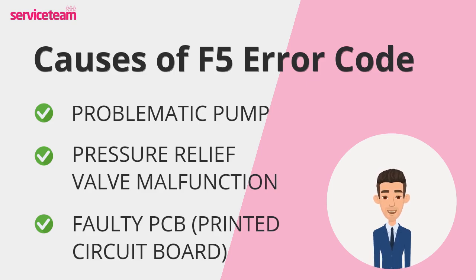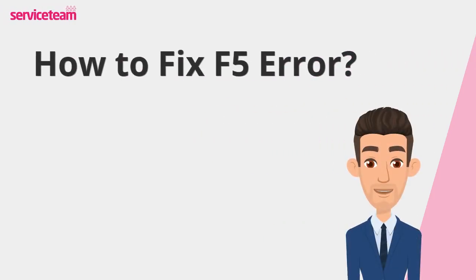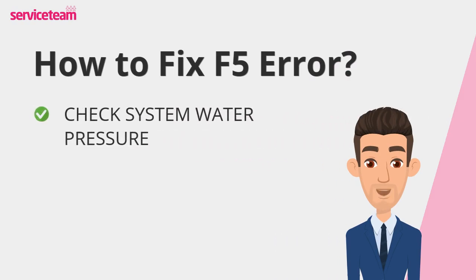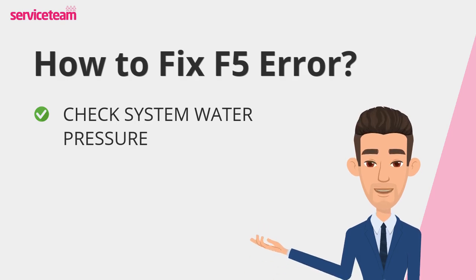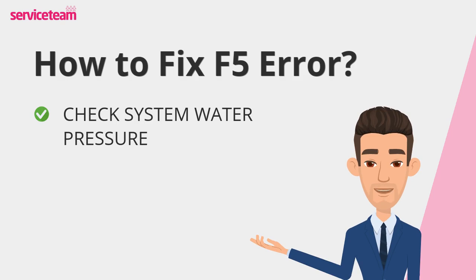Understanding these causes is the first step toward getting your boiler back on track. Let's find out how to fix the F5 error code. First, check your boiler's water pressure — it should read between 1 and 1.5 bar. If it's too low, use the filling loop to top it up. Refer to your manual for detailed guidance. Glowworm boilers need the right pressure to work properly, and low pressure is a common cause of the F5 fault.